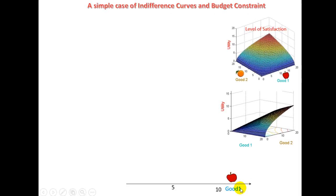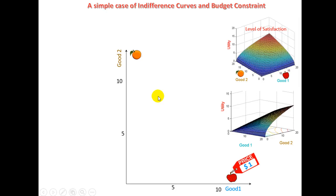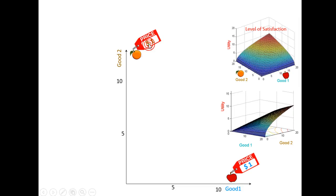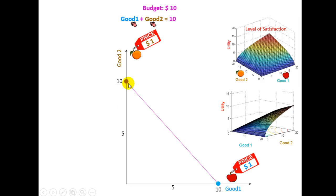Budget constraint means that if you have good one (apple) and good two (orange), and assuming that the price of one apple is one dollar and the price of one orange is one dollar, then if you have a budget of ten dollars you can buy a certain amount of apples and a certain amount of oranges and the sum has to be ten. So if you buy only apples you get the point (zero orange, ten apples), and if you buy only oranges you have zero apples and ten oranges. This line connects all the points that satisfy this constraint.